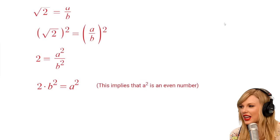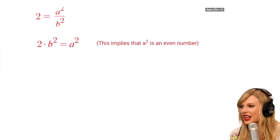This implies that A squared is an even number, since it is 2 times B squared. Now, let's consider A. If A is even, then A can be expressed as A equals 2 times some integer K.